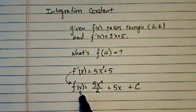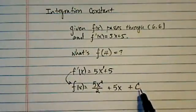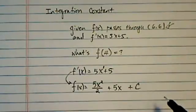Without this constant, we can't evaluate f at 4. So we need to find the constant. And how do we find the constant? We're going to use the clue. The function passes through point (6, 6).